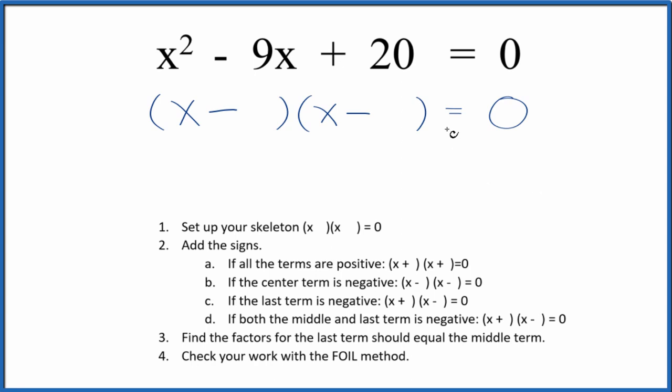4 times 5, that gives us 20. And if we put 4 here and 5 here, negative 4, negative 5, that'll give us the negative 9. So we've factored this equation, x squared minus 9x plus 20.